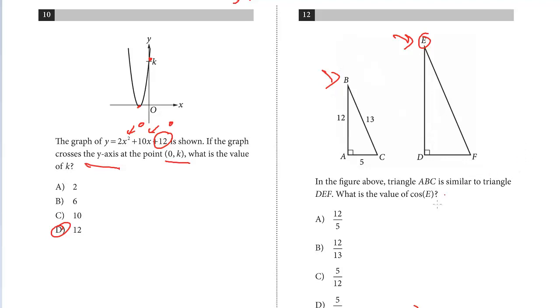Sometimes it's a basic SOHCAHTOA. I'll write out the mnemonic SOHCAHTOA. We're solving for cosine—that's the C. And so that is adjacent over hypotenuse.